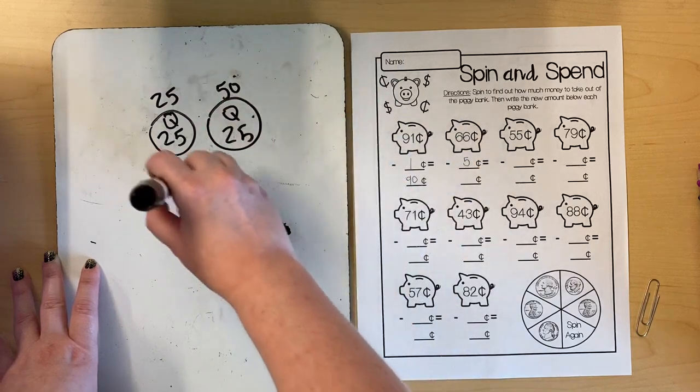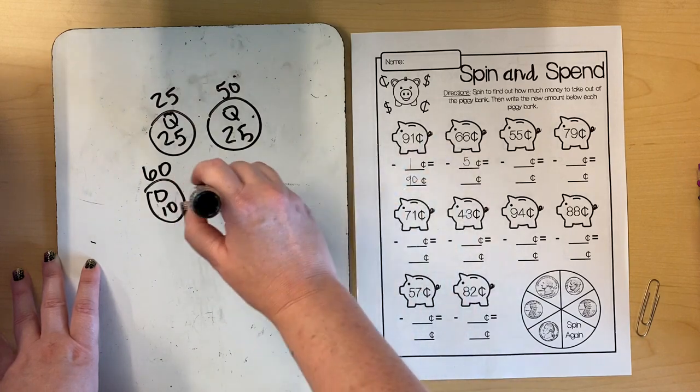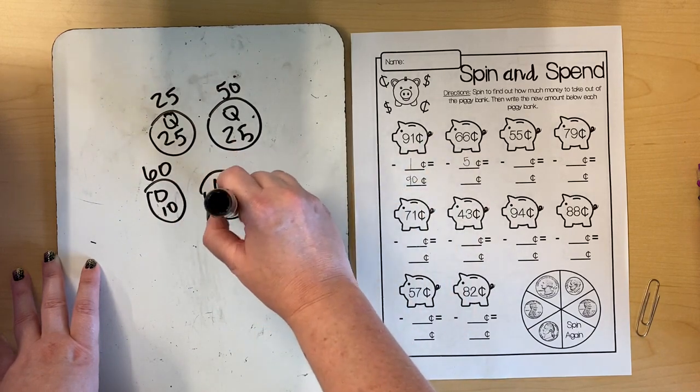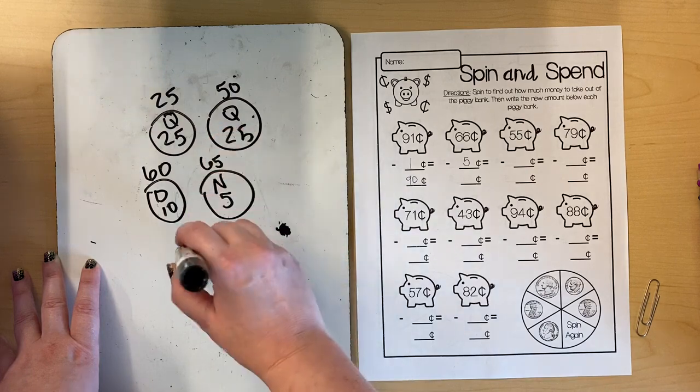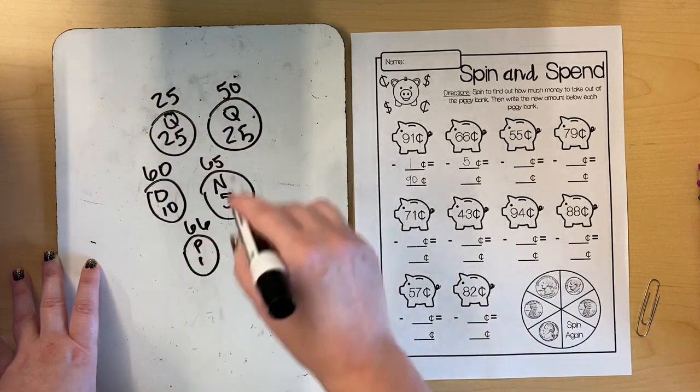Now I need a dime to get to 60. I need to get to 66 so I'm gonna do a nickel for 5 cents. That's 65 and a penny for 1 cent. That's 66. So here's my 66 cents.